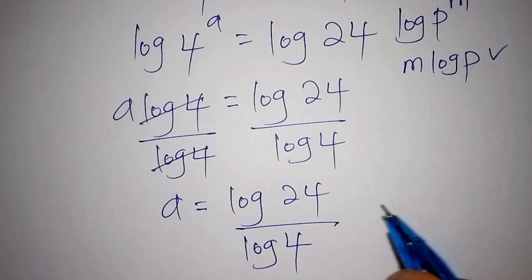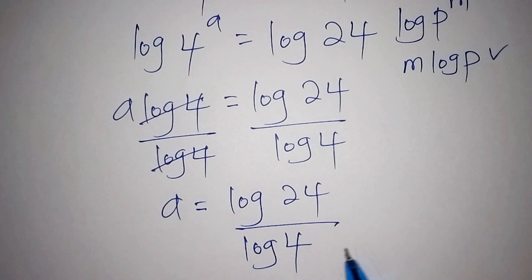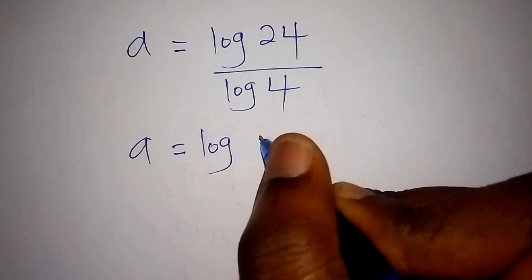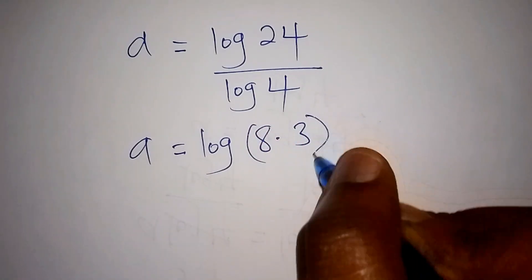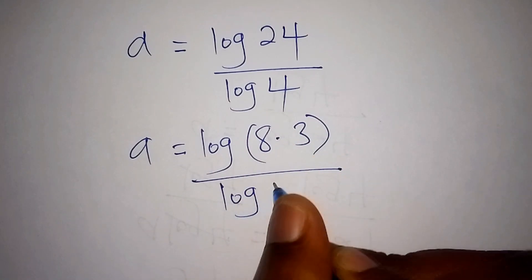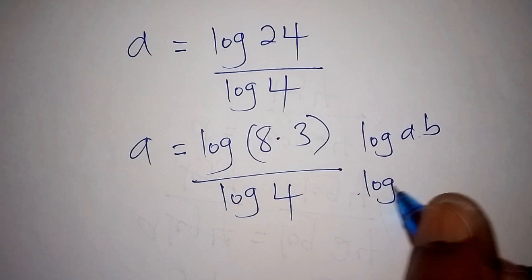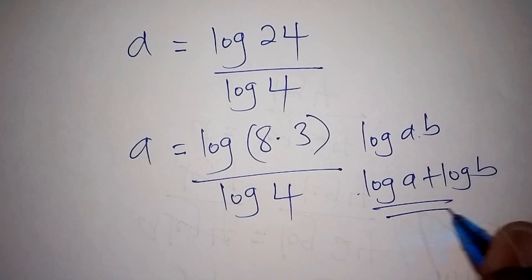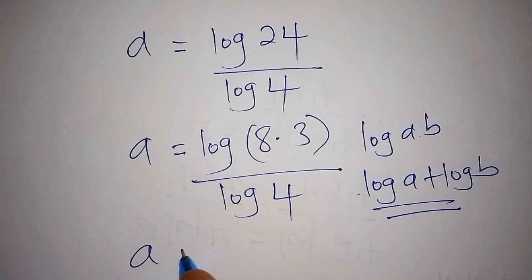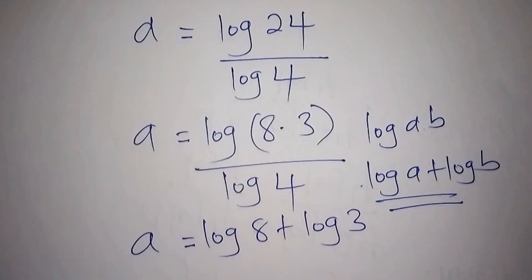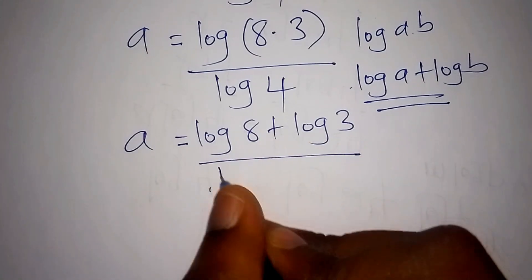That is not the final answer; we can still simplify log 24 over log 4 further. We write the log of 24 as the log of 8 multiplied by 3, all over log 4. Using the log product rule — log(a × b) = log a + log b — we get a equals log 8 plus log 3, all over log 4.